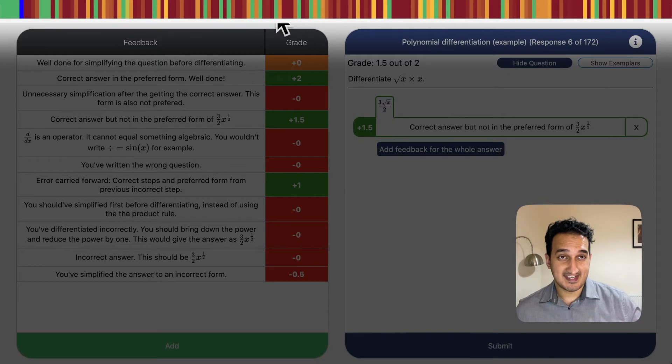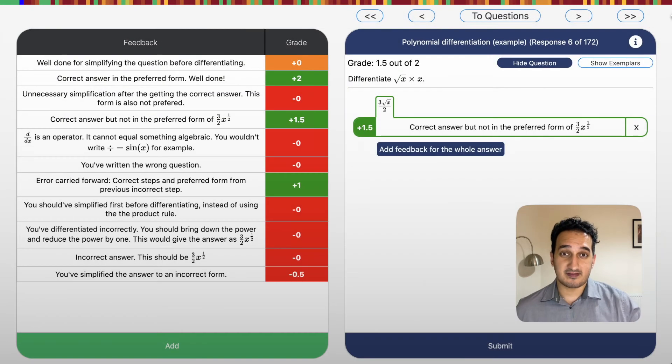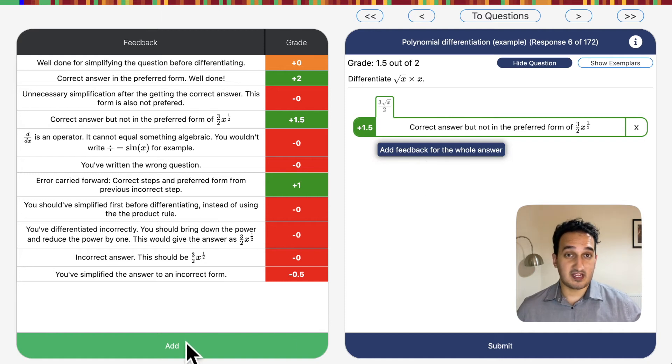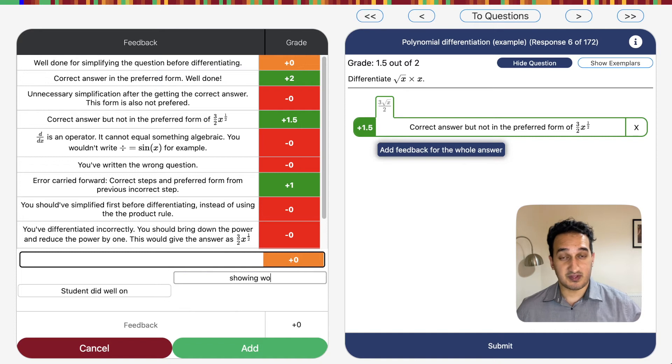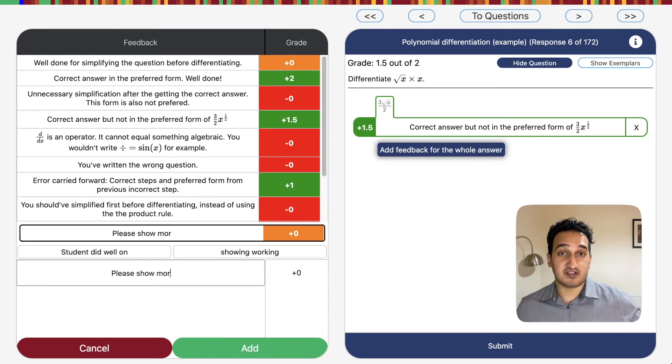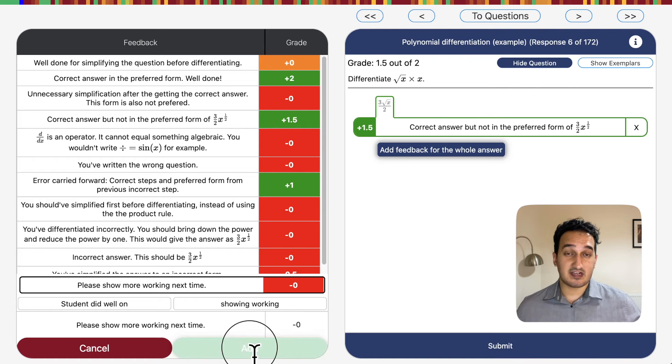Red means not started, green means complete and anything in between means partially complete. Here we have to add new feedback. Simply click add. Categorize whether or not this is positive or constructive feedback with a category. That will give you a big picture of how your cohort is doing. Fill in the rest and click add.